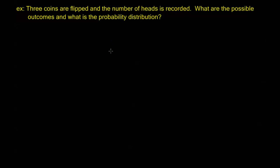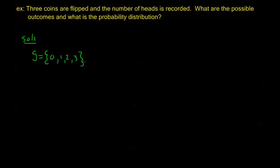Now let's look at another example. Three coins are flipped and the number of heads is recorded. What are the possible outcomes and what is the probability distribution? The possible outcomes — what we're actually recording — are zero, one, two, and three heads. But again, these sample points are not uniform; they don't have equal probability. So I need to look at this in a uniform environment and use that to find the answers.